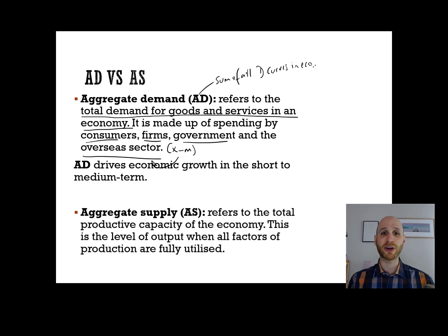If we then shift to aggregate supply, aggregate supply refers to the total productive capacity of the economy. It's like how much the economy can produce. It's all about output. Aggregate supply is the level of output when an economy is using all of the resources that are available to it. There's no excess or spare capacity. Aggregate supply is really important in driving economic growth in the long term.